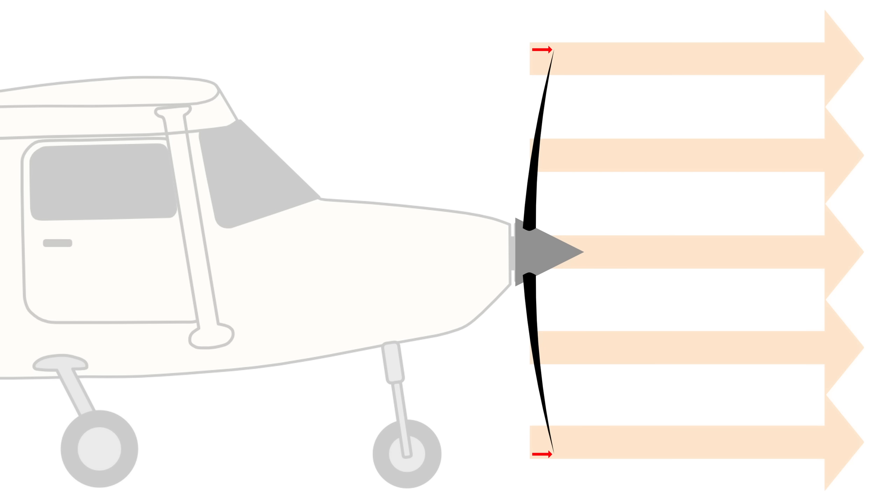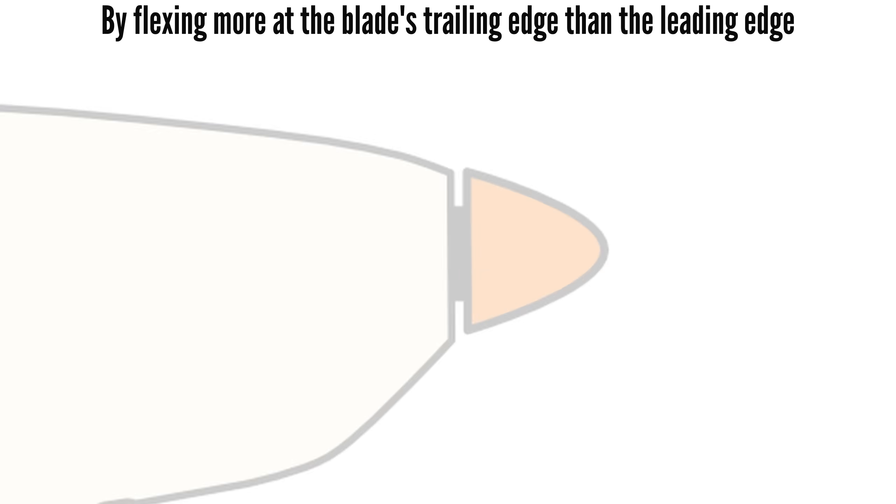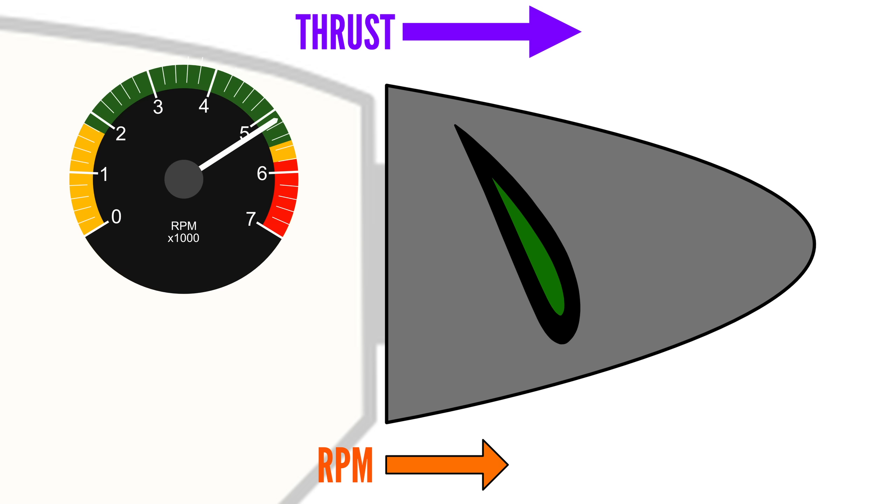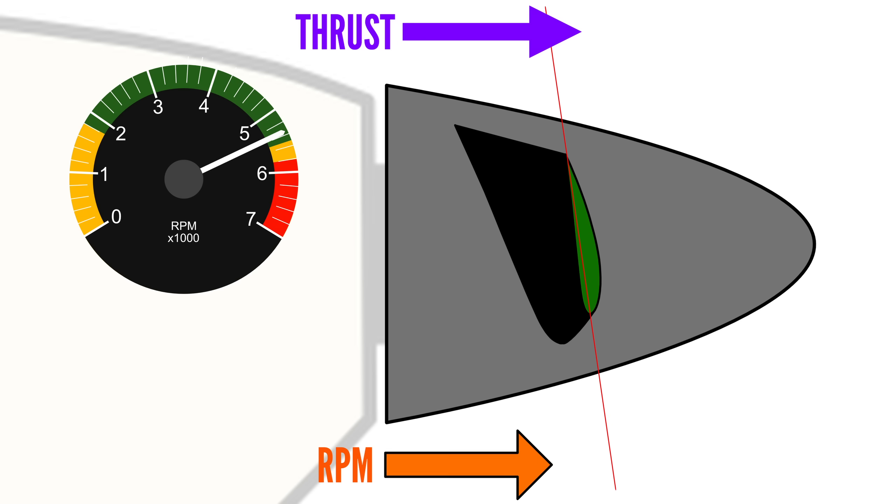With ESR propellers, the blades are designed so that this bending changes its angle of attack. For example, during takeoff, when thrust is at its maximum, the blades bend forward, reducing the pitch angle. This lowers the propeller load and increases engine RPM.